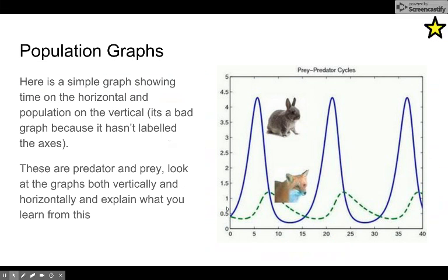If you were to graph populations like this, bunnies go up into a huge population — remember, they're lower on the food chain, so there are fewer foxes — and the foxes peak just a little bit later. In year five you have your maximum number of bunnies, and by year eight the foxes peak and eat all the bunnies down to nothing, and the fox population drops. So they're not in sync with each other, and you can tell which one's the prey because they have to outnumber the other one.